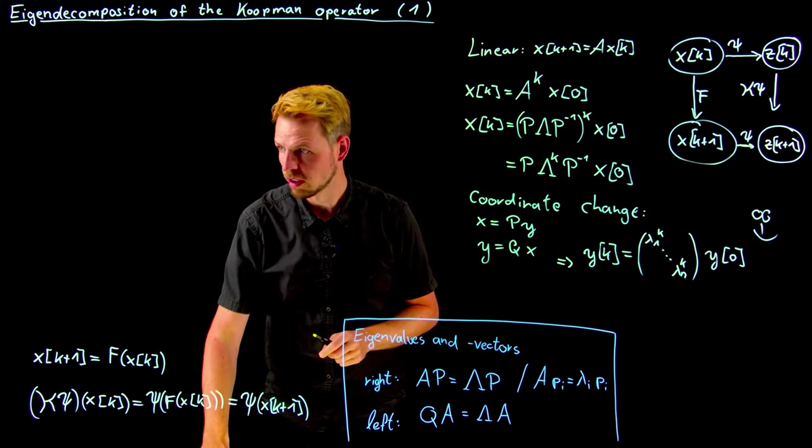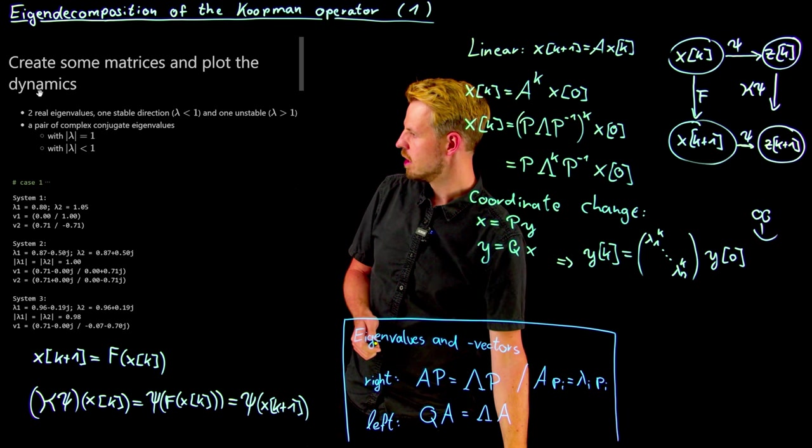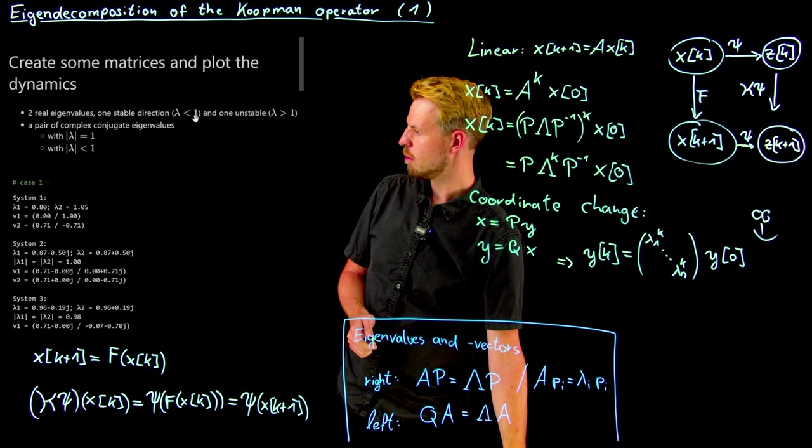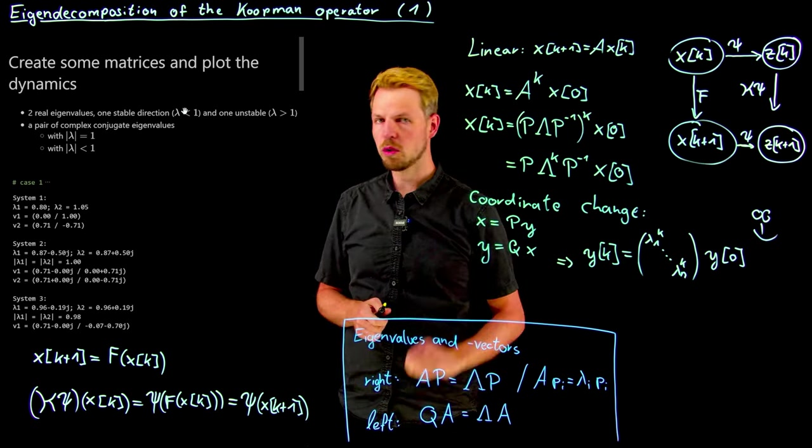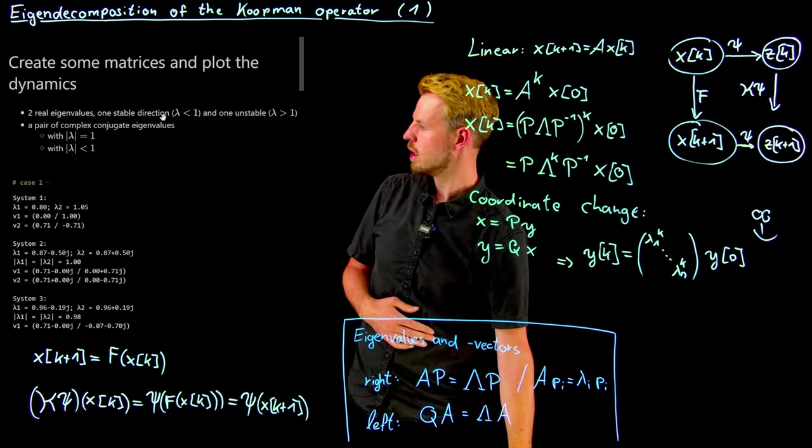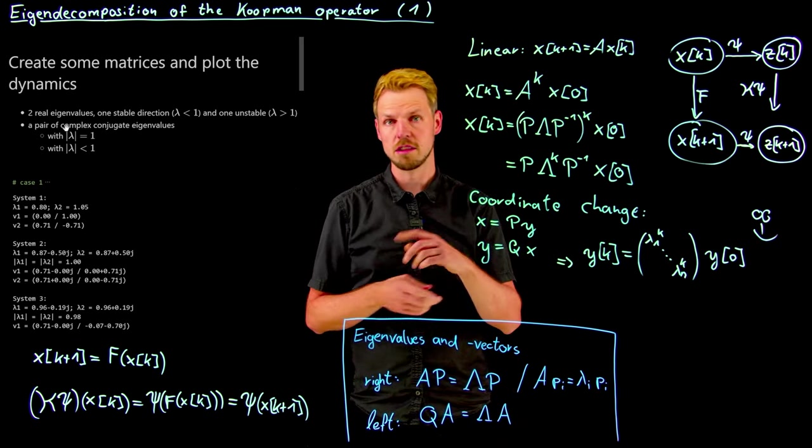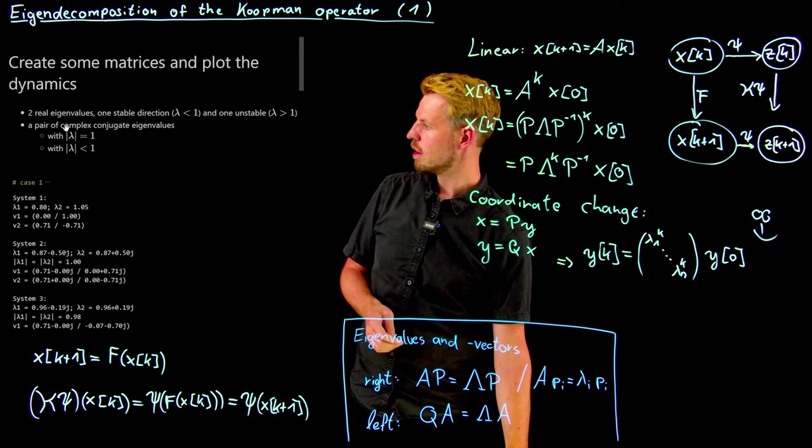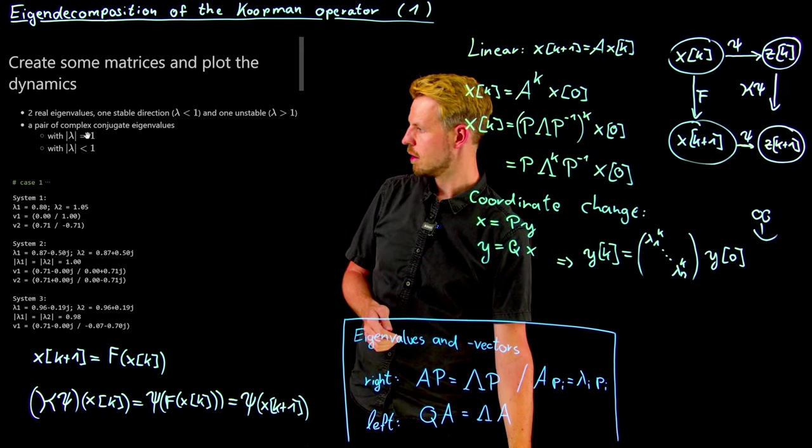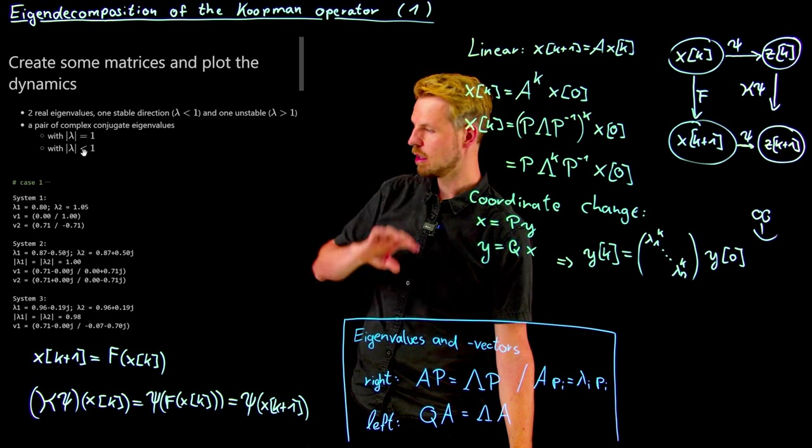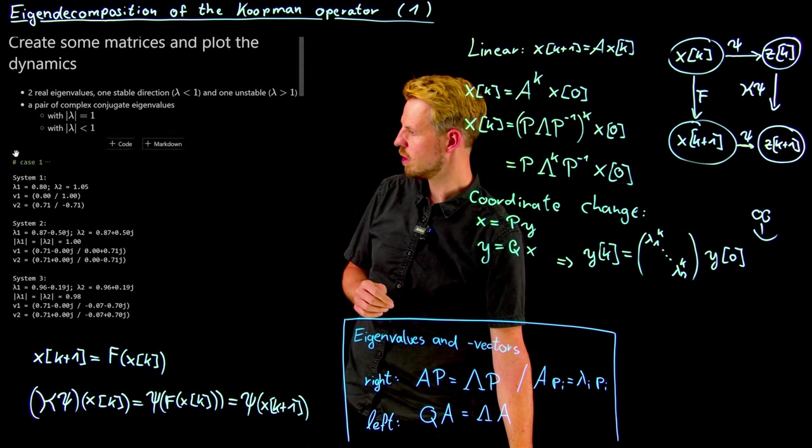And let's study this at a small example here, where I will simply introduce three small matrices, where we have two real eigenvalues that are both in absolute value smaller than one. For details, you can have a look at the linear systems video that we have seen before. And then we are going to study two more systems where we have a complex conjugate pair, meaning the system oscillates with spectral radius equal to one and smaller than one, which means this is periodic and this is stable and should go to the origin eventually.